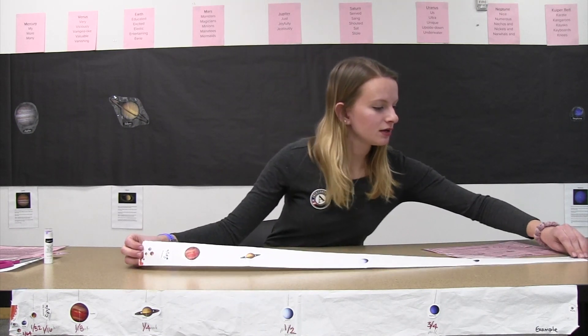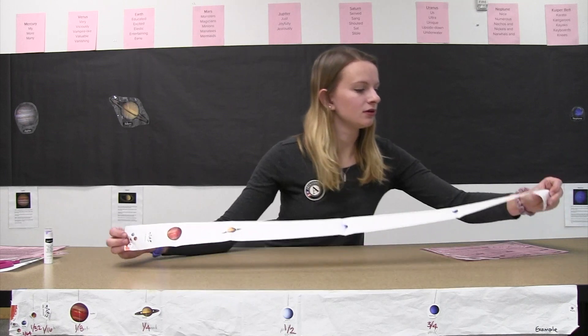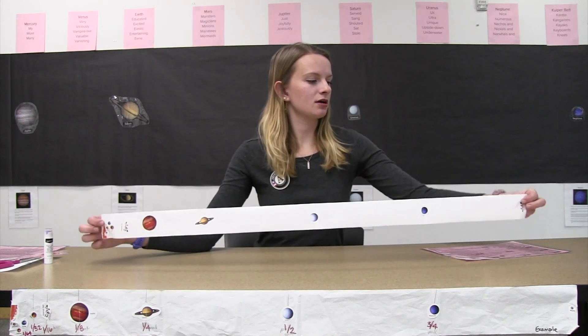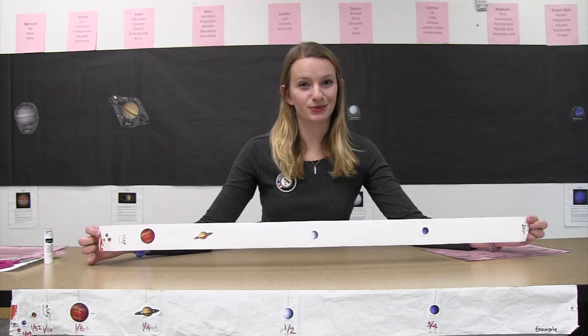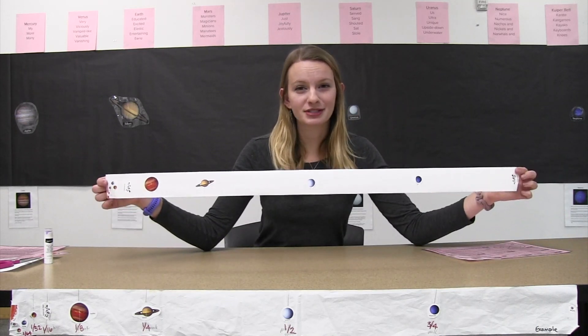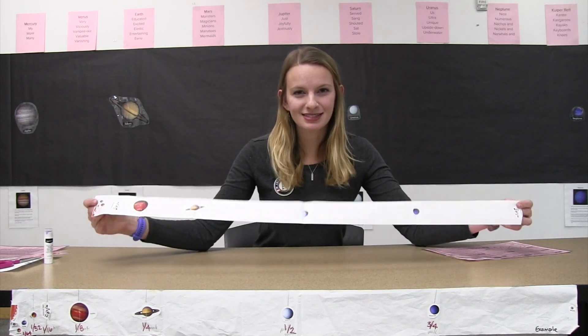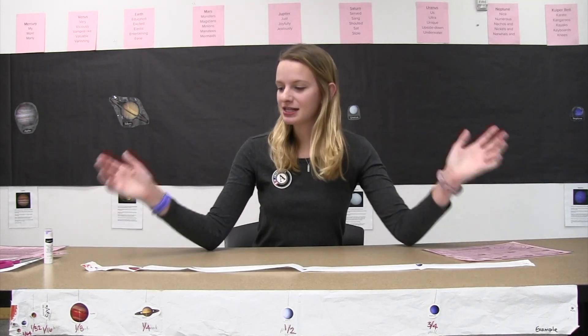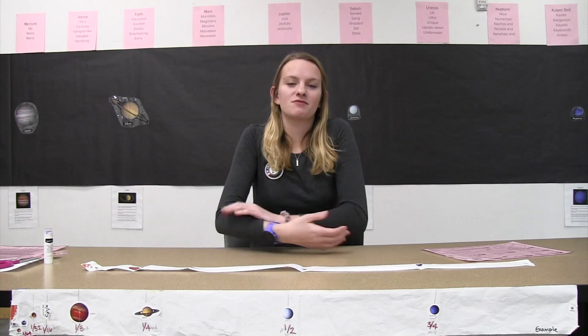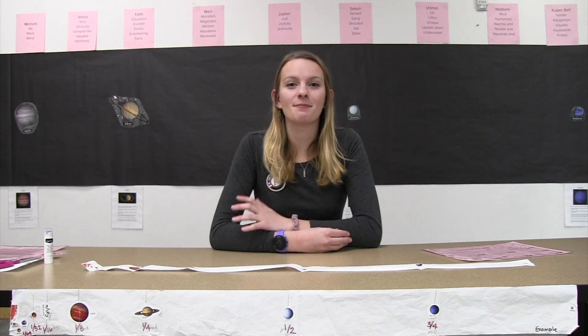When you're all done, your final meter pocket solar system should look something like this. And if you also want to remember the order of the planets, you can create a mnemonic device, or a memory sentence, using some of the words in pink above my head.